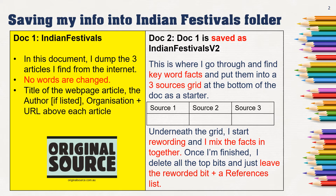I create document number one, my first document, and into that document, which is called Indian festivals — looking here on the left-hand column side — I dump three articles that I find from the Internet, and I don't change any of the words. They've just been copied and pasted. At the top of each article, I put the title of the web page article, the author if he or she is listed, the organization, and the web address. So I've saved that as Indian festivals and have not changed a single word from the Internet.